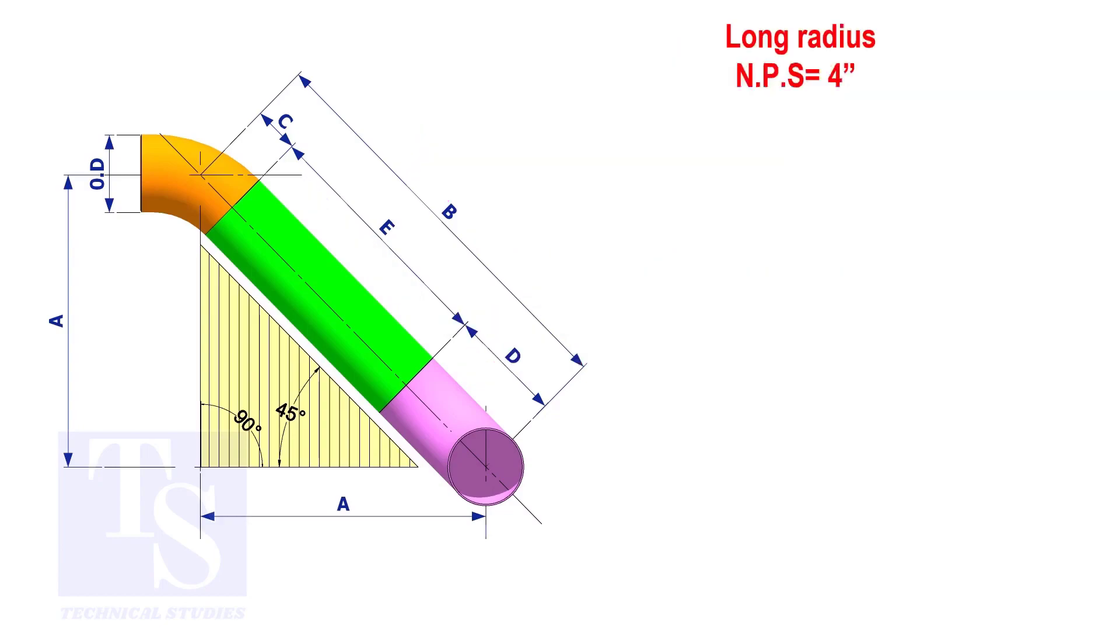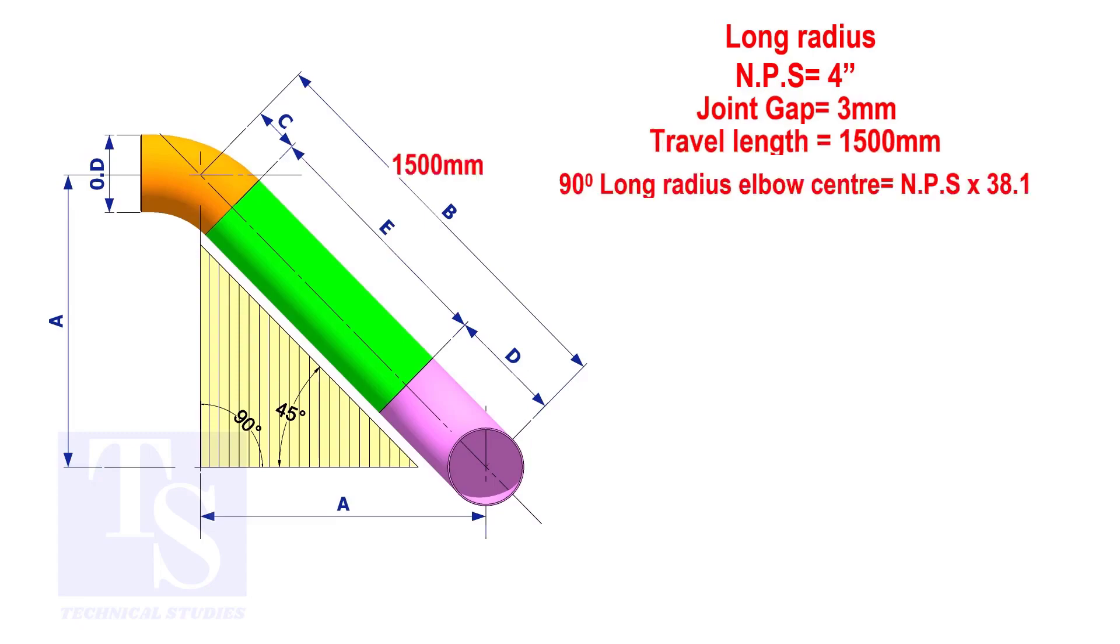Assume that the elbows are long radius. Calculate the true length of the pipe. The elbow center is the nominal pipe size multiplied by 38.1. So, the elbow center of the 90 degree elbow is 152.4 millimeters.